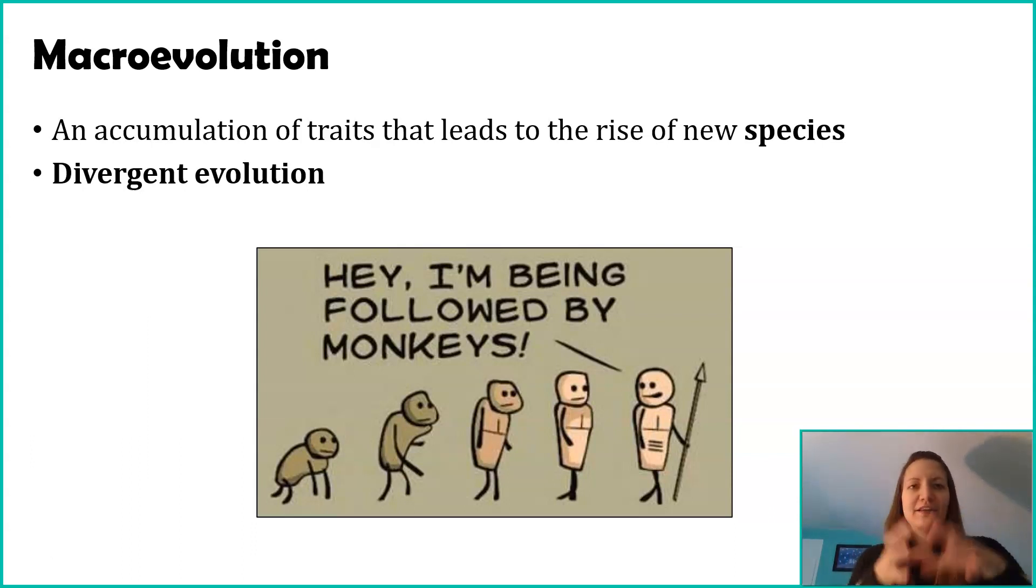Macroevolution is essentially microevolution over and over again. It's an accumulation of traits over many, many generations that eventually leads to the rise of new species. You might get small coloration changes, small behavioral changes, small mechanical changes. But as those accumulate more and more, you start seeing a distinction between organisms within a population to eventually when we get to the point that we say that population is no longer like the others in its group, that it's much more different.